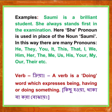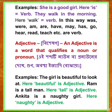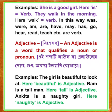Next, verb means in Bengali 'kriya.' A verb is a doing word which expresses being, having, or doing something. Examples: She is a good girl — here 'is' is the verb. They work in the morning — here 'work' is the verb. In this way, was, were, am, are, have, may, go, hear, read, teach, etc. are verbs.